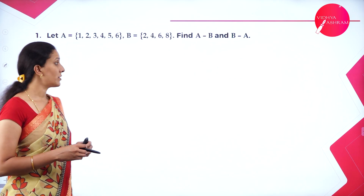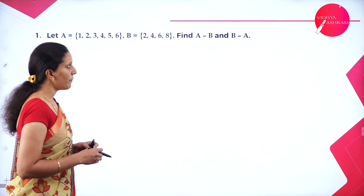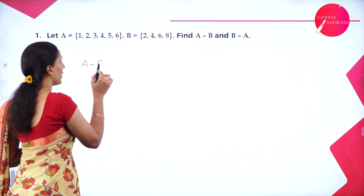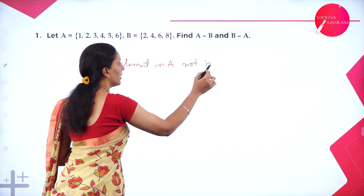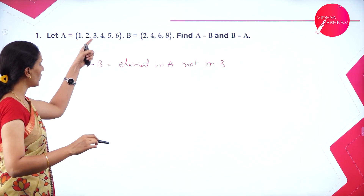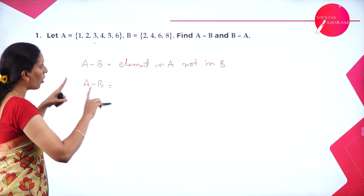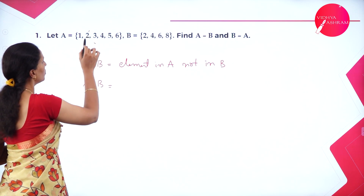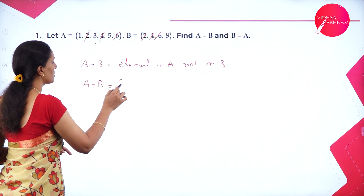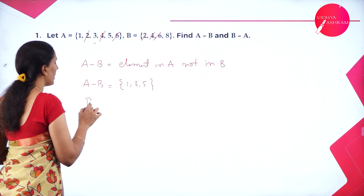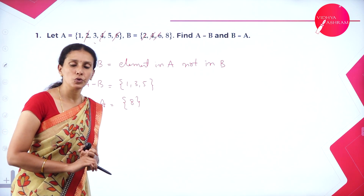Now let's take a few examples for difference of sets. Let A equal 1, 2, 3, 4, 5, 6 and B equal 2, 4, 6, 8. Find A minus B and B minus A. A minus B means elements in A that are not in B — remove all common elements which are 2, 4, 6. So A minus B contains only 1, 3, and 5. B minus A is elements only in B not in A — since 2, 4, 6 are in set A, only 8 remains. So B minus A is 8.